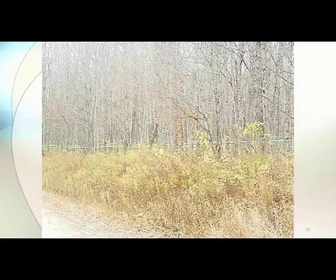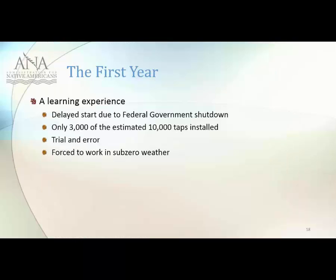We did have a delay when we started this project. The government had shut down, so the grant wasn't available until approximately November. By the time we got everything together, we started working in December. What they call a polar vortex had moved in, so we were working in extreme cold just to get this going. We did manage to get in 3,000 taps. We had a lot of trial and error — it was a learning experience for all of us. We learned to work outside sometimes in very adverse weather conditions. But all in all, we did it. We felt proud of ourselves. After the professional line installer left, we continued working, made mistakes, realized them, and were able to correct them.